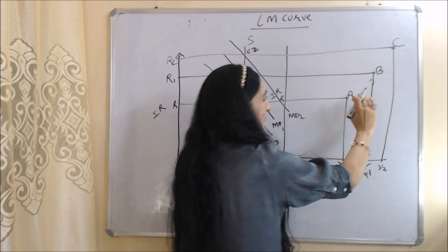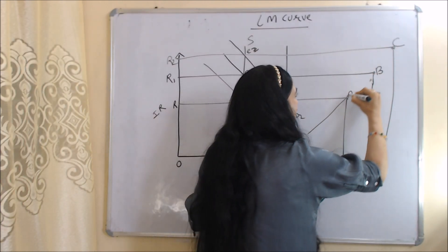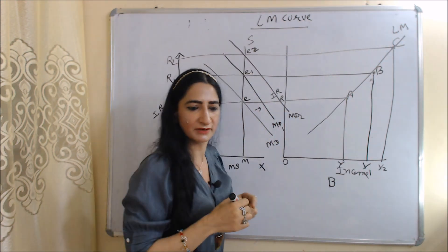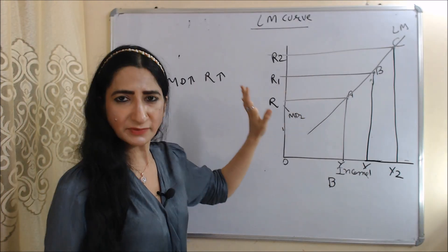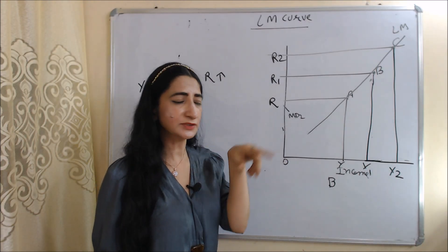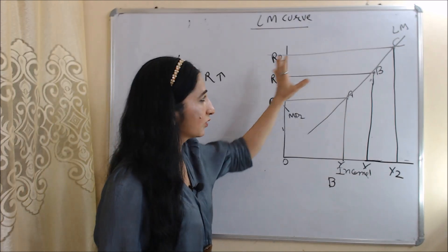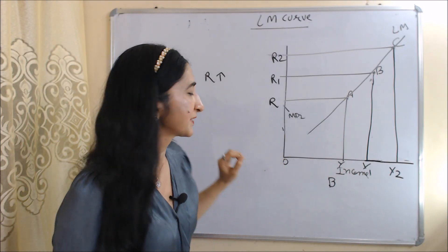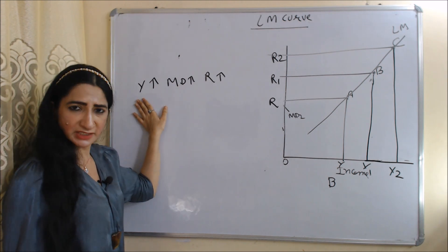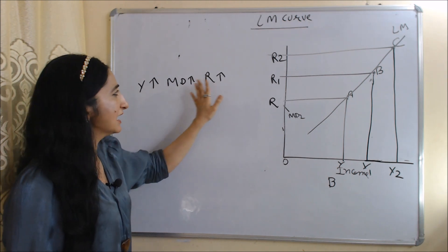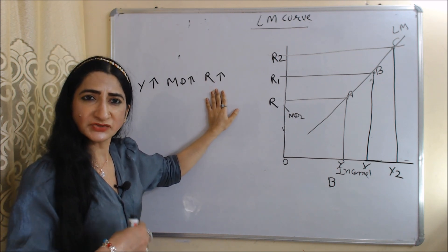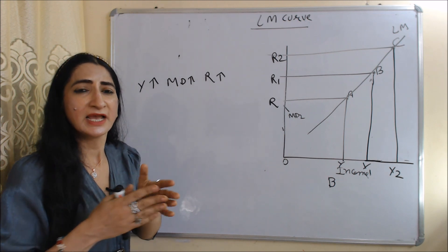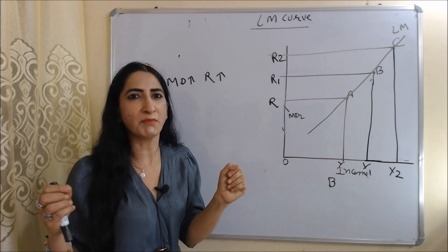We now have three equilibrium points A, B, and C. When we join all these equilibrium points, we draw our LM curve. The LM curve shows various combinations of income and interest rate, and all points on the LM curve — like A, B, and C — show equilibrium in the money market. The process of equilibrium is: initially income increases, so money demand increases, and as a result interest rate also increases. If interest rate continuously increases, after a certain time period money demand will fall and become equal to money supply, and ultimately we achieve equilibrium in the money market.